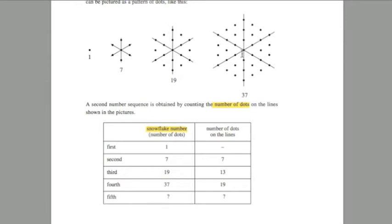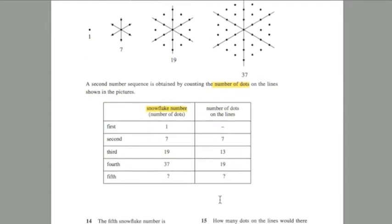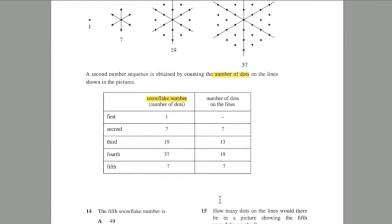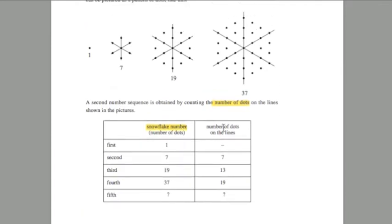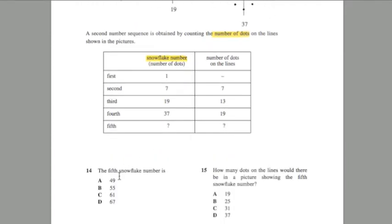and the snowflake number. So let's go through the questions. What they've done is given you the first, second, third, fourth, and the number of dots as well. And that follows a similar pattern. But it's good to know the difference between the two major concepts.